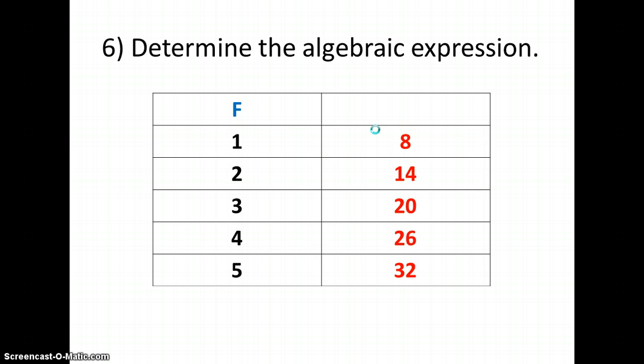Let's try one more. Let's look at F. In this case, I'm increasing by 1 each time on the F column. So I look over to the right and notice I am increasing by 6 each time. So that tells me I'm going to have a 6F. And let's see how this works.